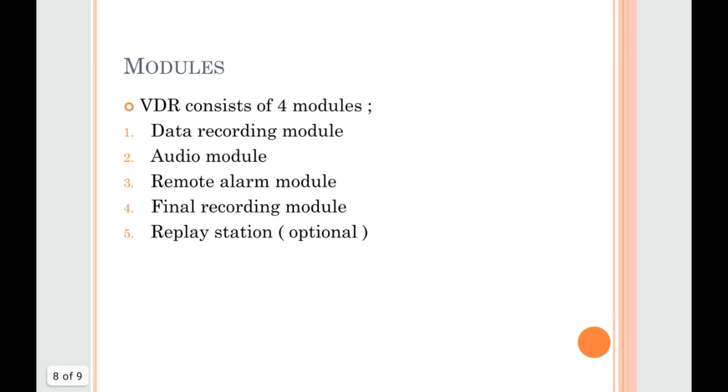Modules: VDR consists of four modules — data recording module, audio module, remote alarm module, and final recording module — plus an optional replay station.